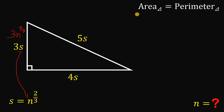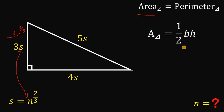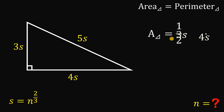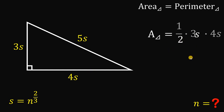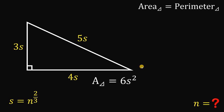Now let's continue. We are also given that the area and the perimeter of this triangle must be equal. First, let's find the area: area equals one-half times base times height. Substituting, we get area equals one-half times 3s times 4s. That gives us 12s squared divided by 2, which equals 6s squared. So the area of this right triangle is 6s squared.